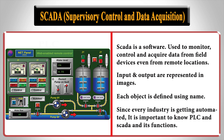Since every industry is getting automated, it is important to know PLC and SCADA and their functions. For example, controlling the level is done by PLC, and the infographics of the level with historical information about it from the last three years or more is done by SCADA.